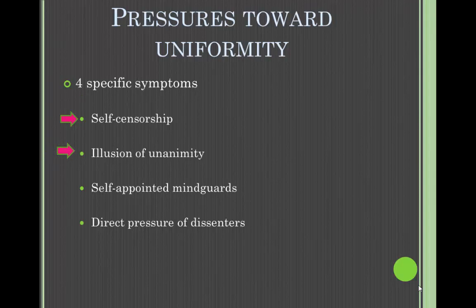The second symptom is the illusion of unanimity — suggesting that silence is consent, so if you don't say anything, you agree. The third is self-appointed mind guards: group members who shield the group from adverse information, believing they act in the group's best interests while withholding information. And lastly, direct pressure on dissenters: pressuring any group member who expresses opinions, viewpoints, or commitments contrary to the majority opinion.